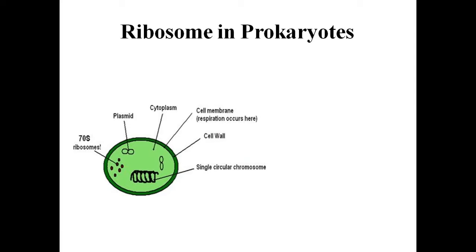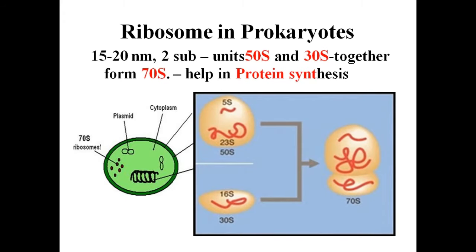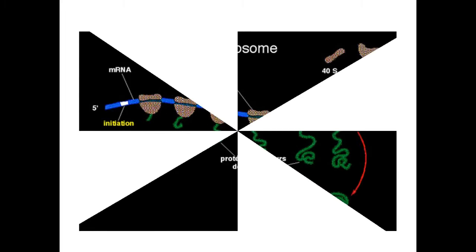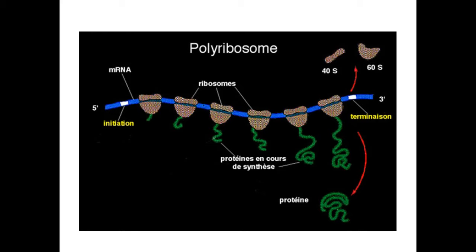Ribosomes in prokaryotes are associated with the plasma membrane of the cells. They are about 50 nanometers in size and are made of two subunits: 50S and 30S, which together form 70S ribosomes. They help in protein synthesis. Several ribosomes may attach to a single mRNA and form a chain called polyribosomes or polysomes. The ribosomes of the polysomes translate the mRNA into protein.